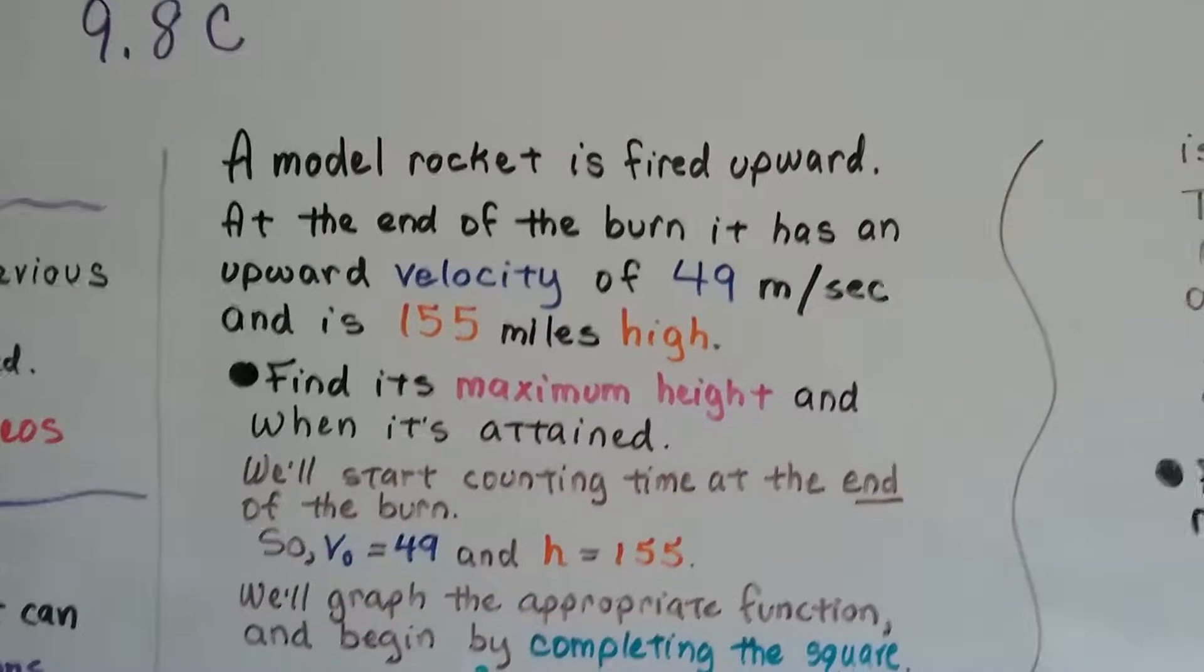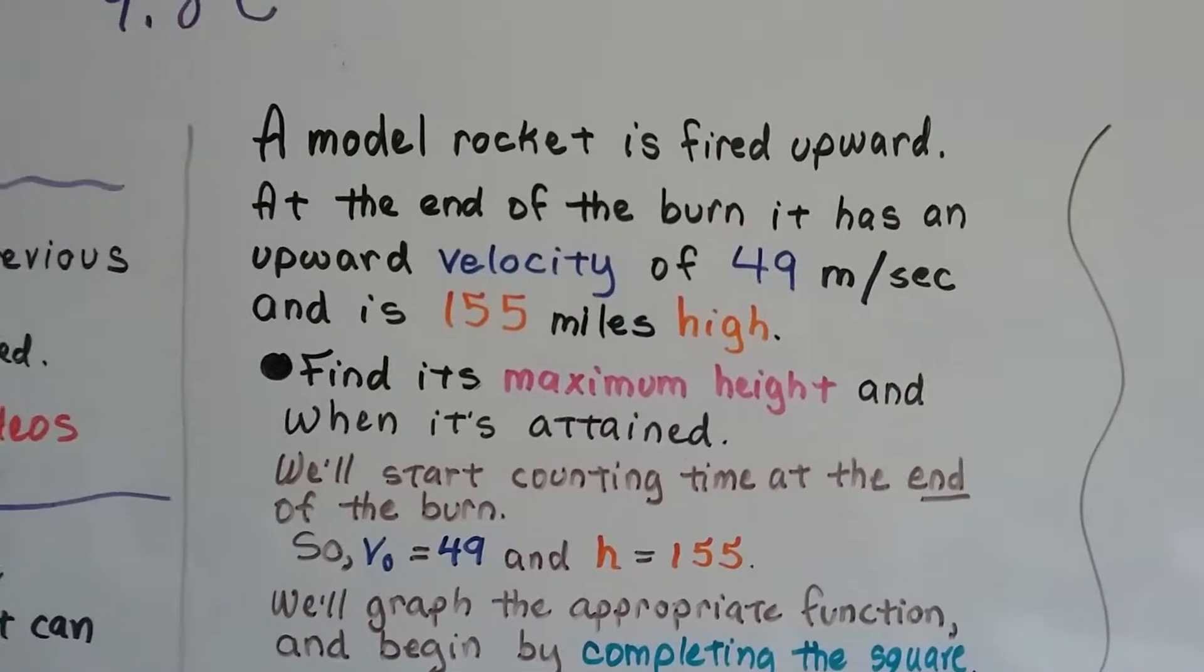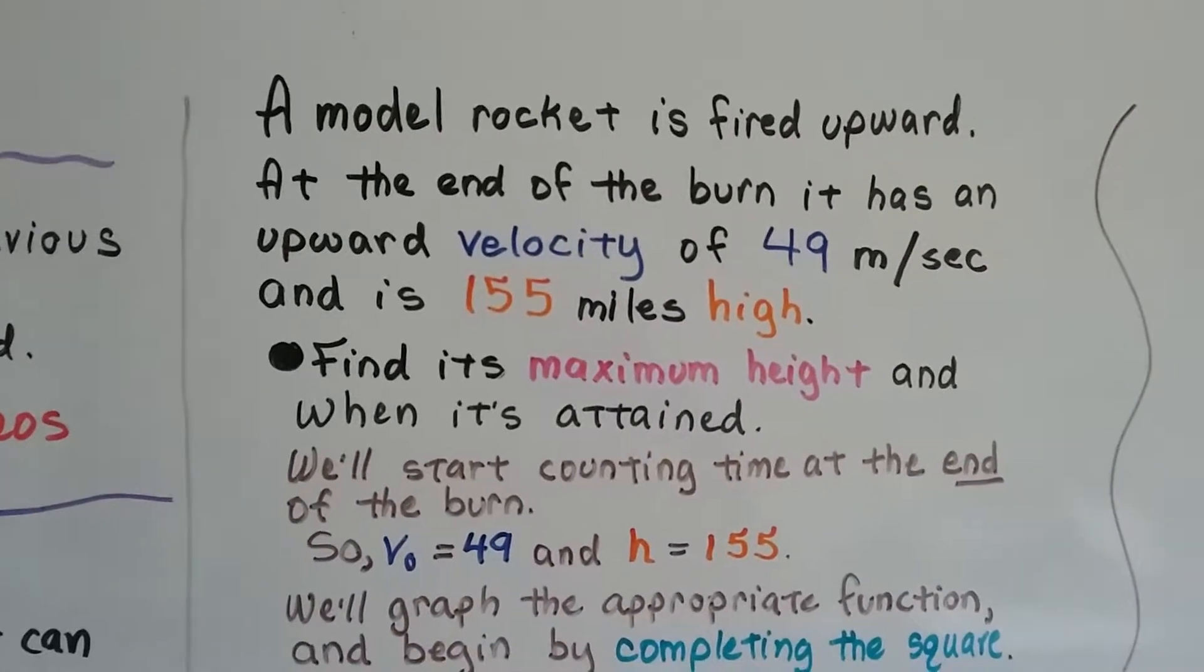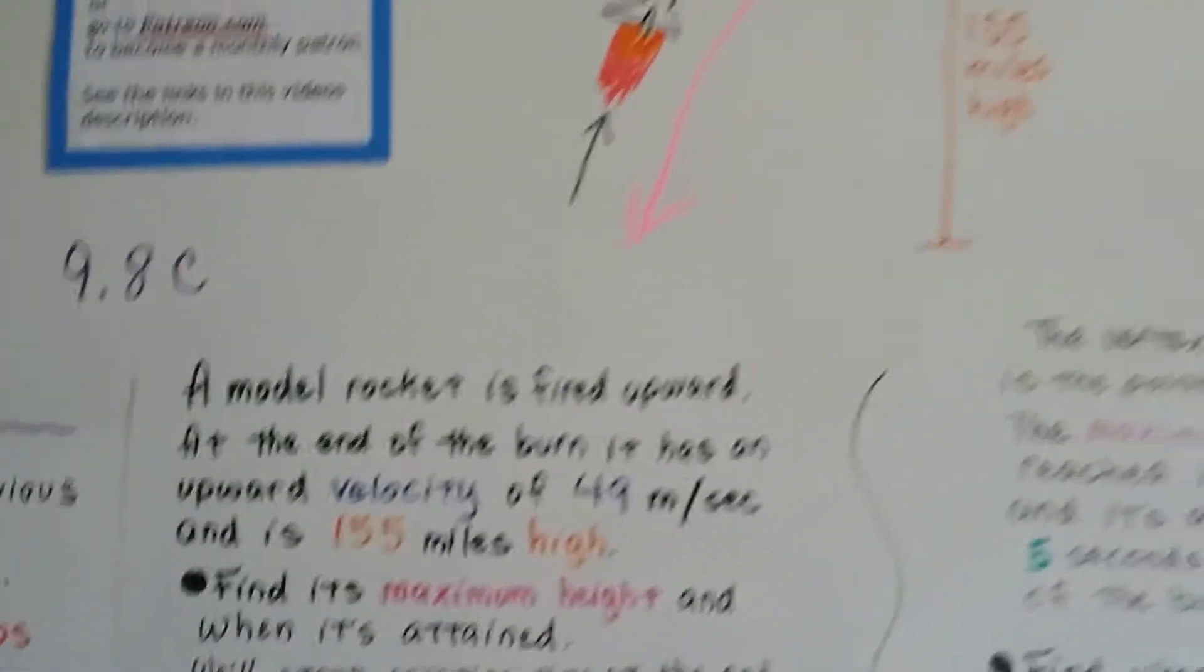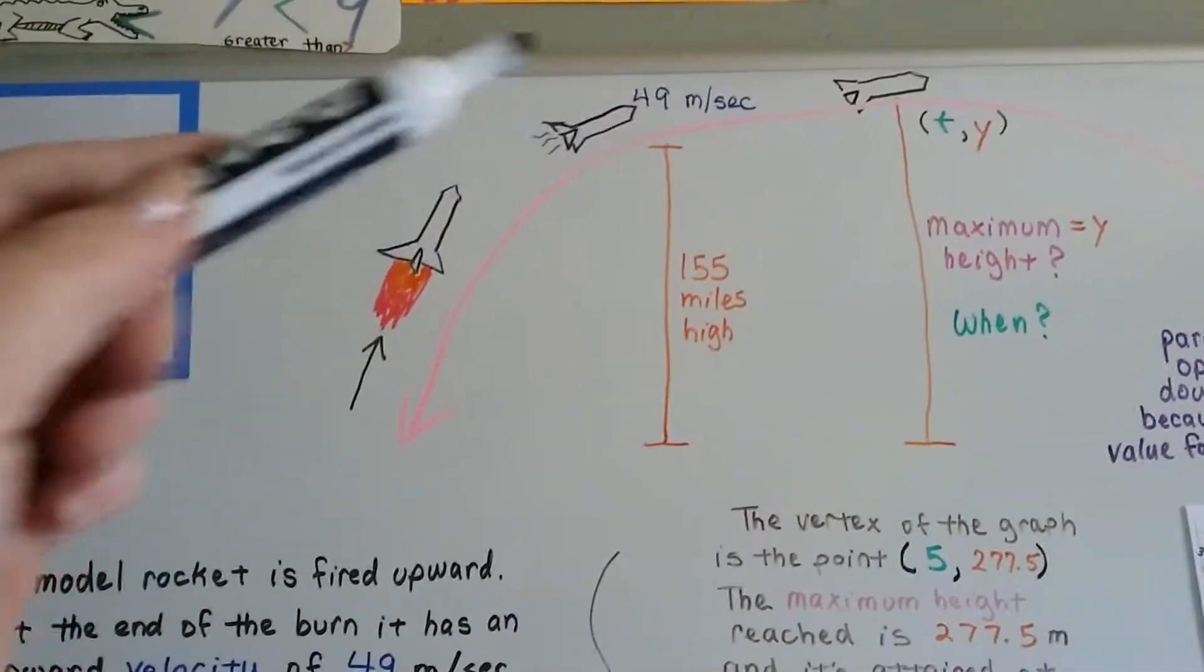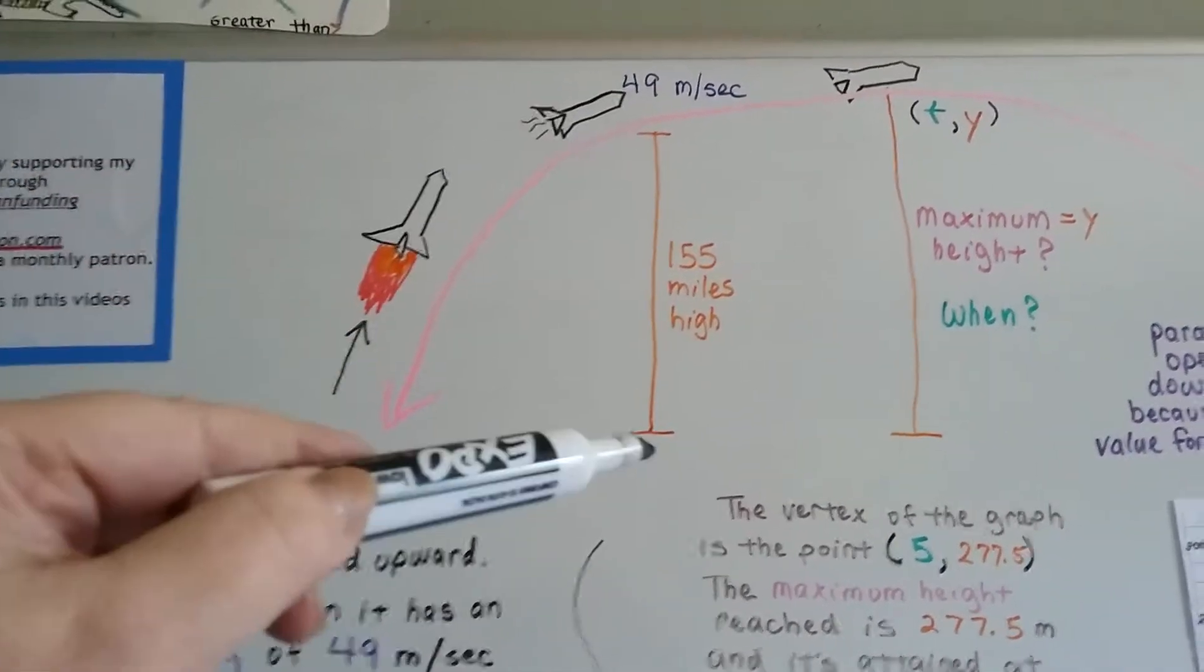A model rocket is fired upward. At the end of the burn, when it stops burning, it has an upward velocity of 49 meters per second and is 155 miles high.